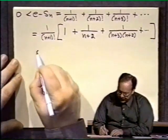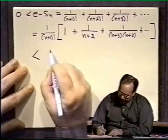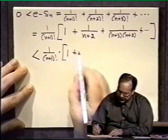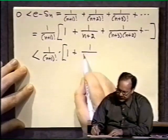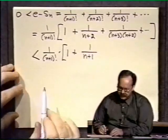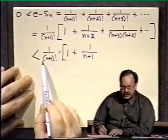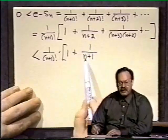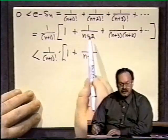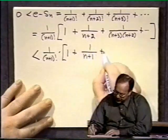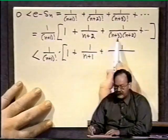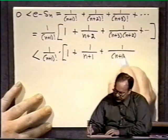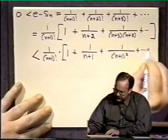Now here is a crucial step. This I claim is less than 1 over n plus 1 factorial times 1 plus, and now I'm going to replace 1 over n plus 2 by 1 over n plus 1. Is that legitimate? Sure it is. I'm claiming that this is greater. I'm claiming that 1 over n plus 1 is greater than 1 over n plus 2. Well, sure it is. The denominator is smaller. So that means the fraction is bigger. Same thing here. I will make the denominator smaller by making the n plus 3 n plus 2 into n plus 1 n plus 1, which is n plus 1 squared. Plus, and I continue that process.